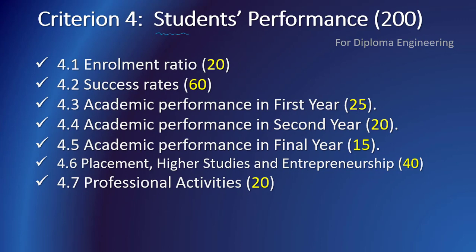The distribution of total marks of 200 among the sub-criteria of criterion 4 are as follows: Students' enrollment ratio is 20 marks; success rates of the students 60 marks; academic performance in the first year 25 marks; sub-criterion 4.4 is academic performance in the second year 20 marks; academic performance in final year is 15 marks; students' placement, higher studies and entrepreneurship is 40 marks; and professional activities of the students in the institute carries 20 marks.